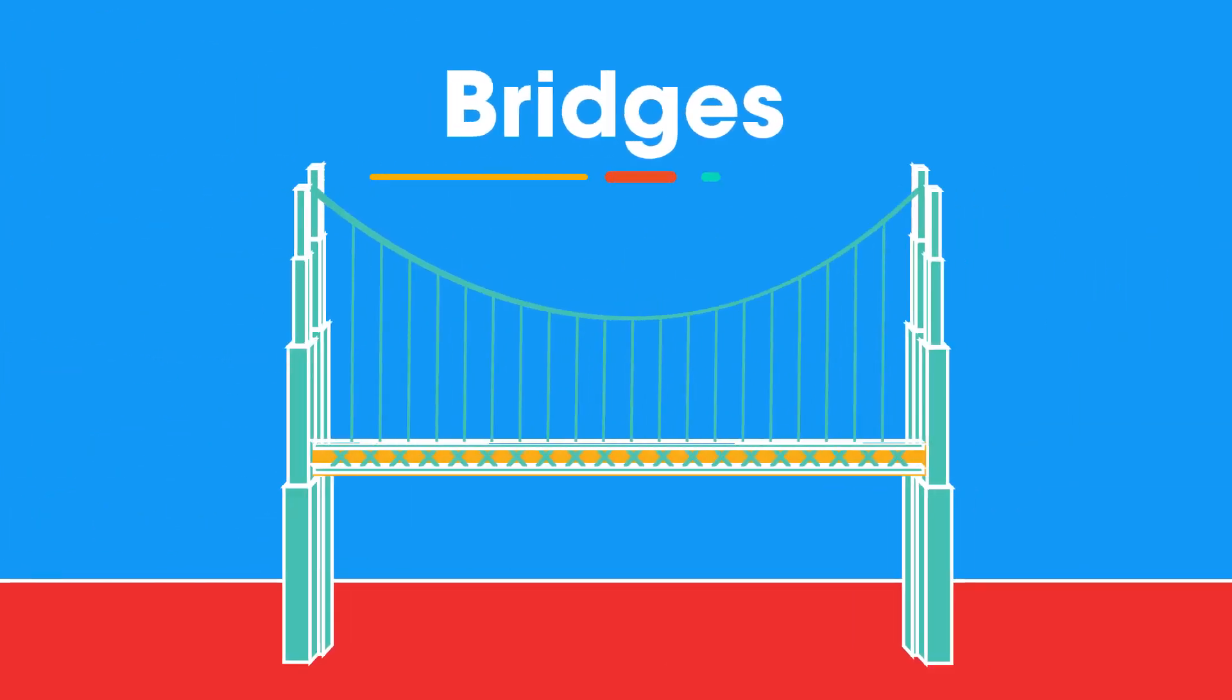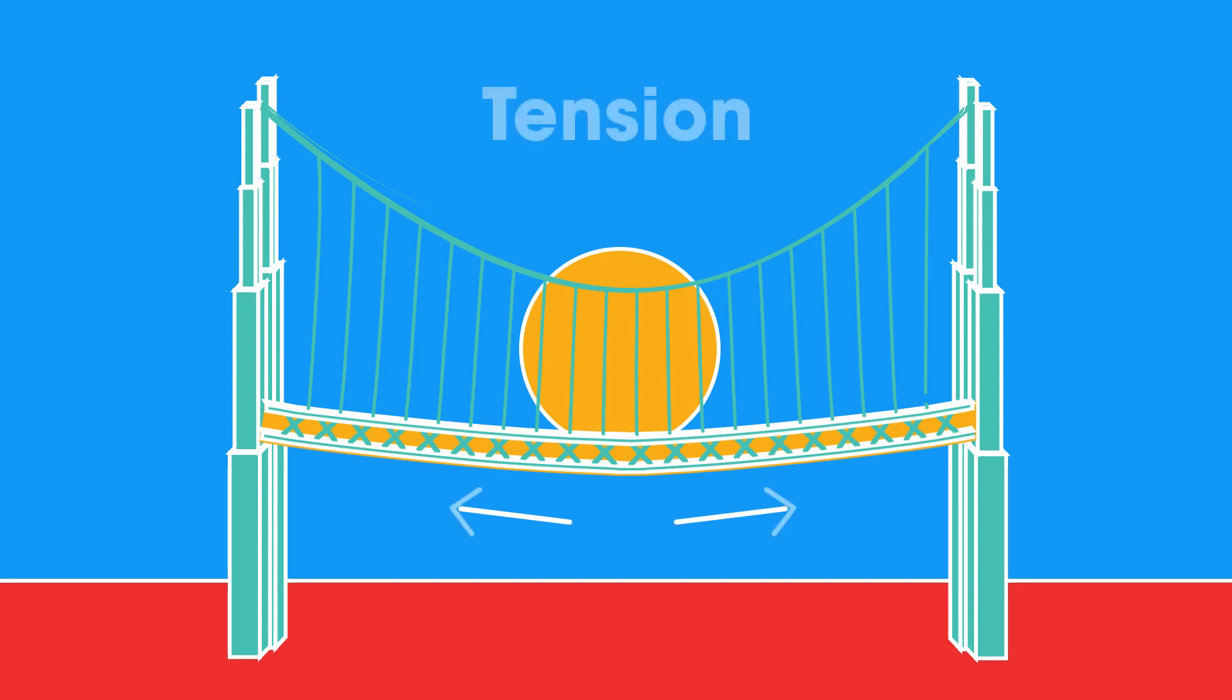Some objects, like bridges, will also behave like springs. When a weight is placed on a bridge, parts will be stretched and under tension. Other parts will be squashed together or compressed.